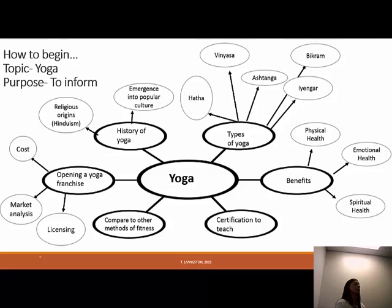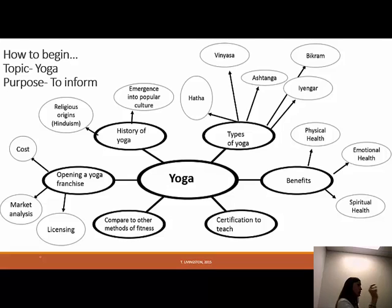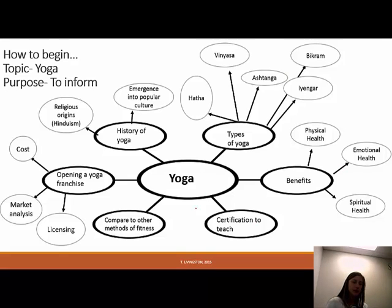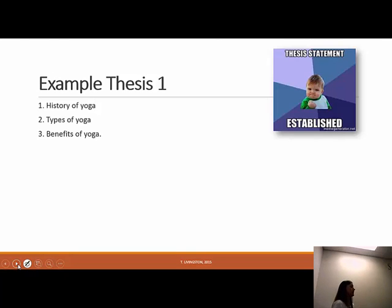There are so many different roads you can go down in conducting your research. Tomorrow when you come in, we're going to look at all the different topics you've thought about, and maybe you'll even need to do more research to fill in more bubbles. Then you'll want to look at what goes together and what doesn't. I'd have a really hard time writing a paper on both how to open a yoga franchise and all the benefits of it, given the length of paper you're writing — that's too much, and they don't go together as well.